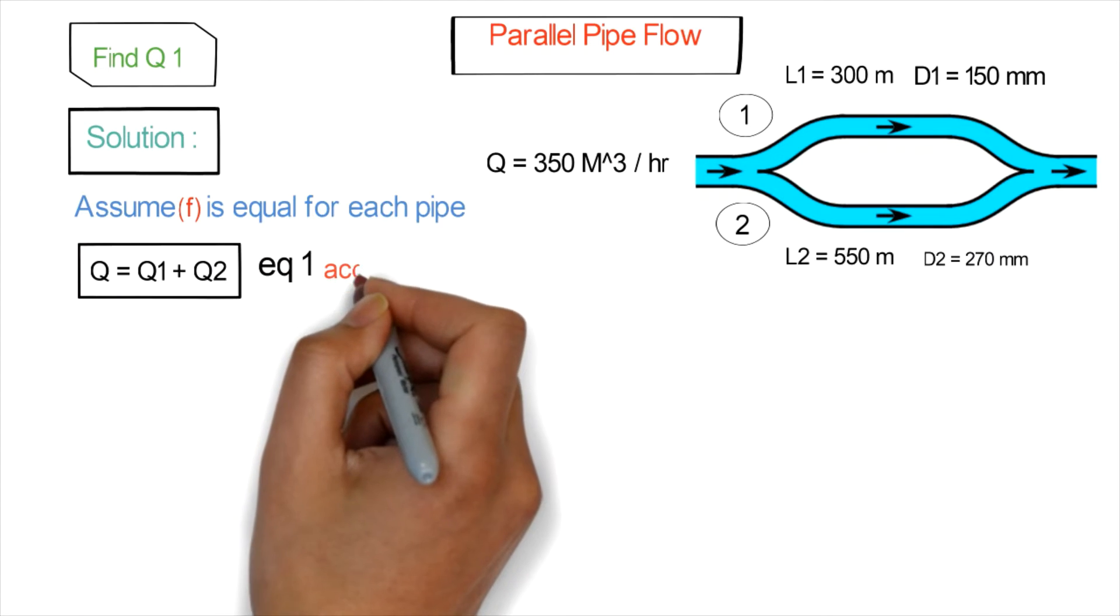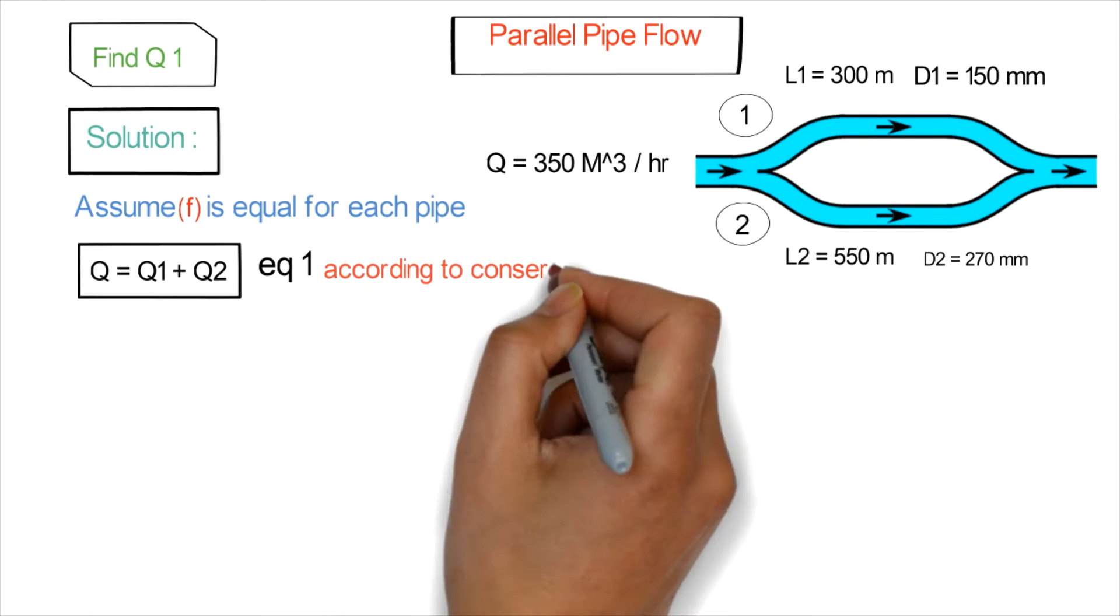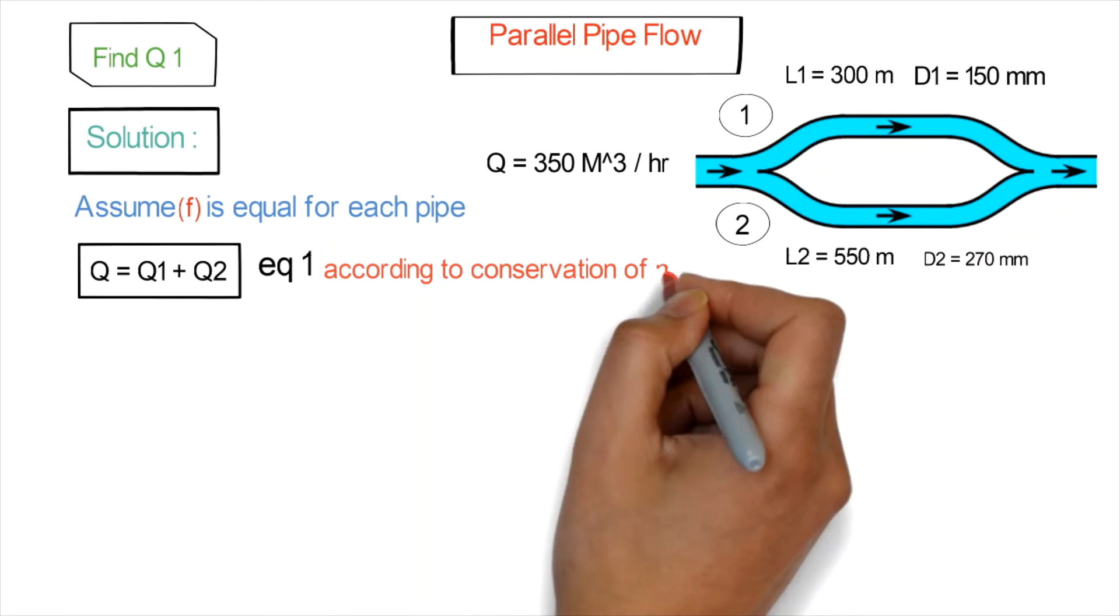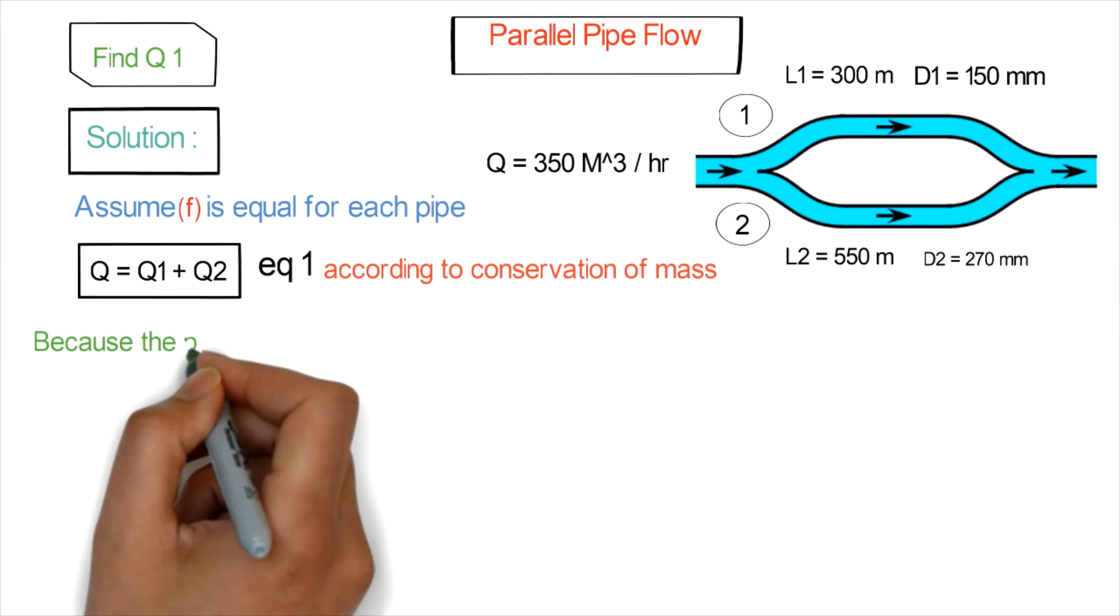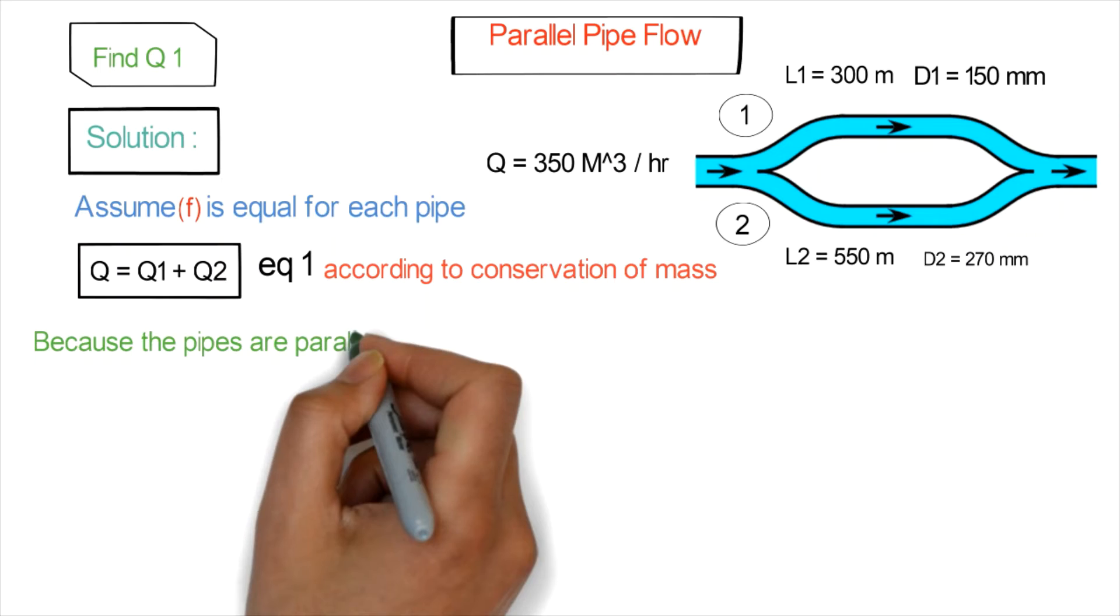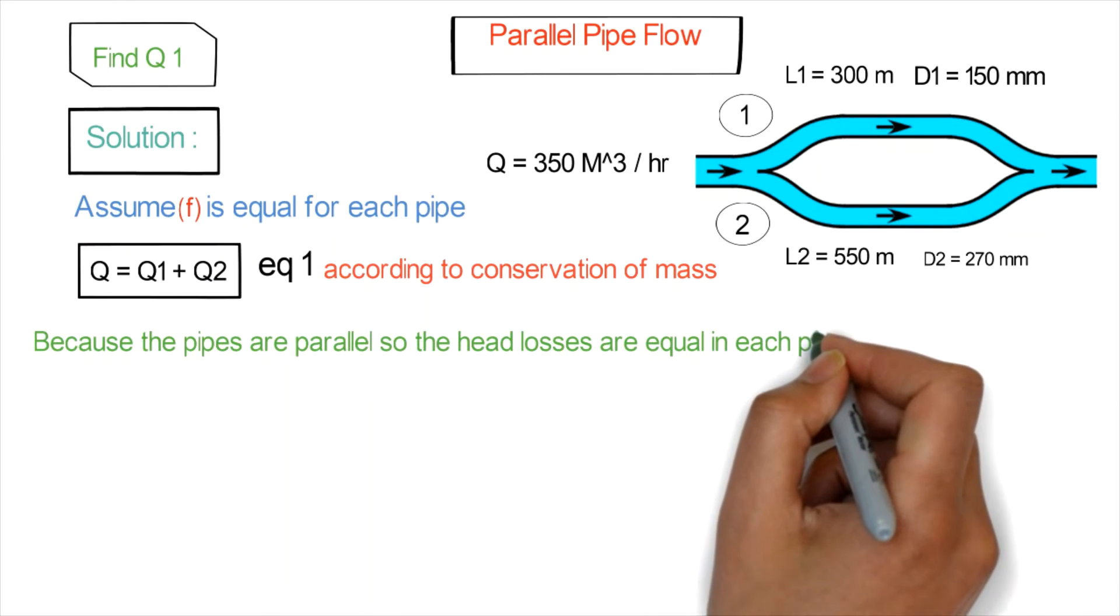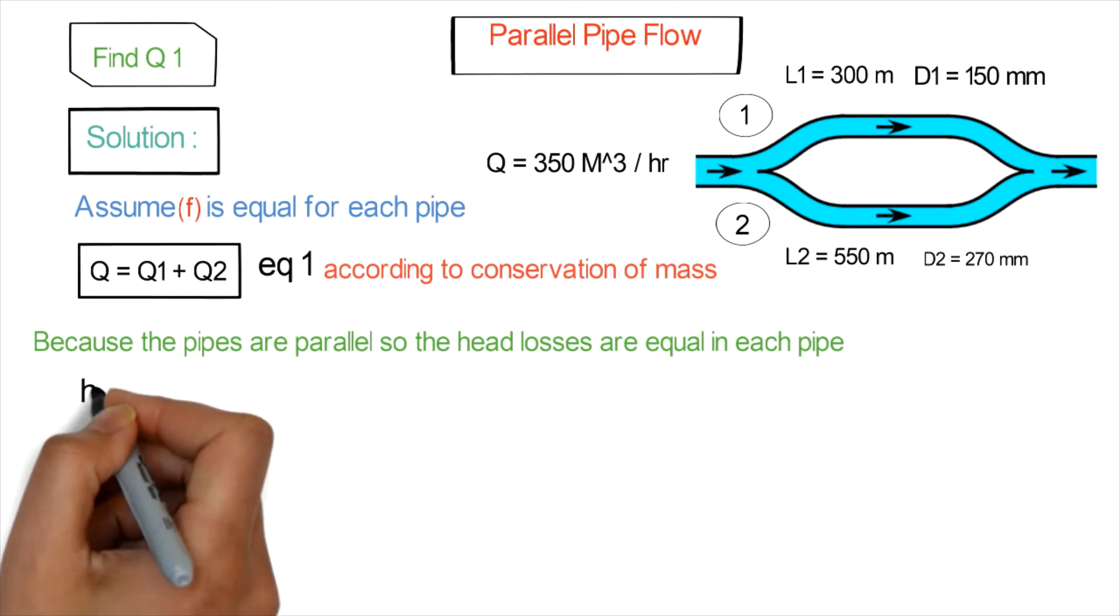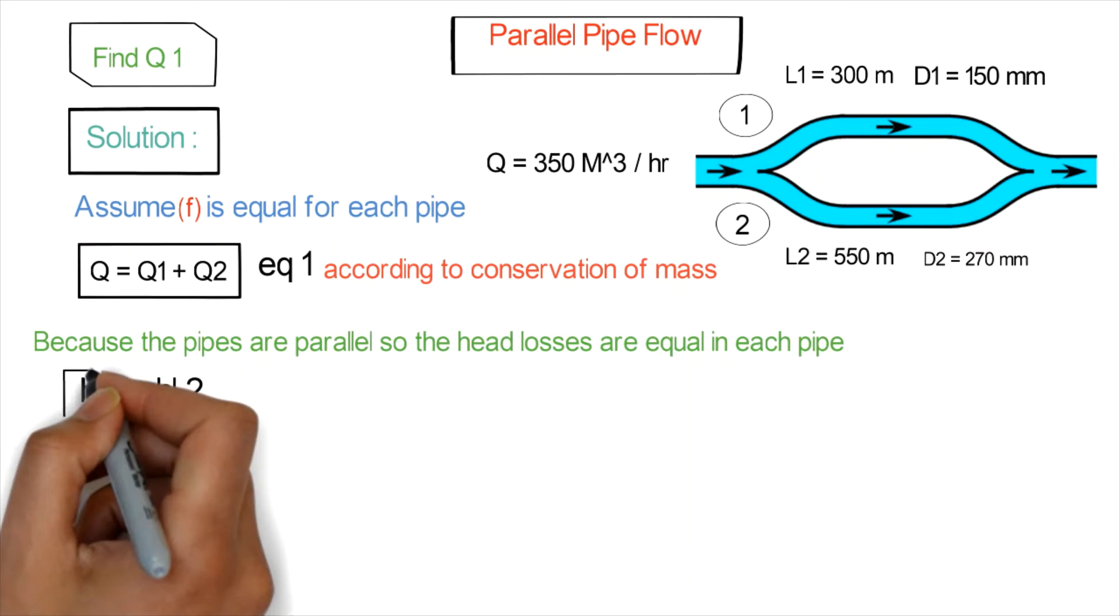Here we have equation one: Q equals Q1 plus Q2 according to conservation of mass. We also have equation two: head loss one equals head loss two.